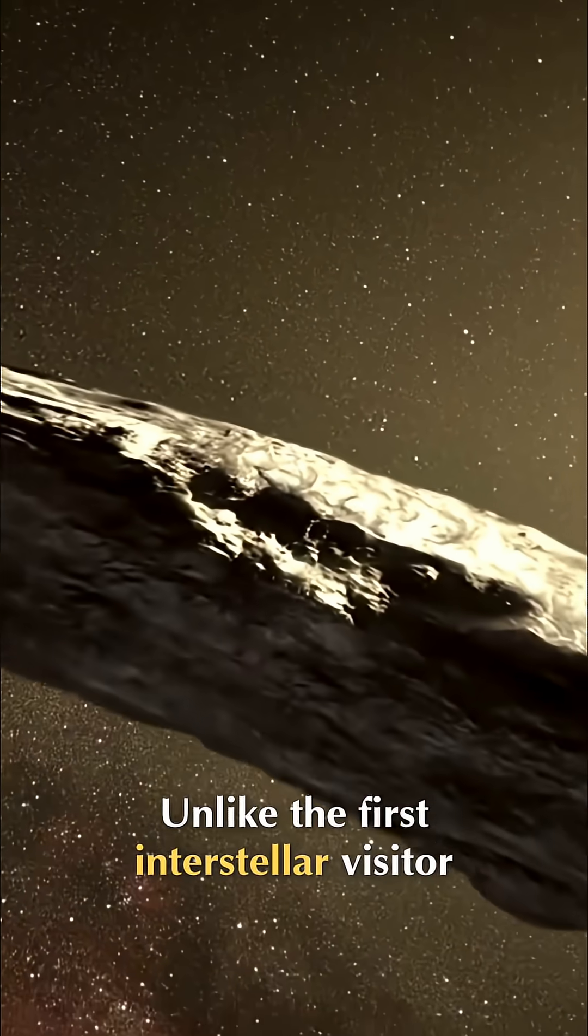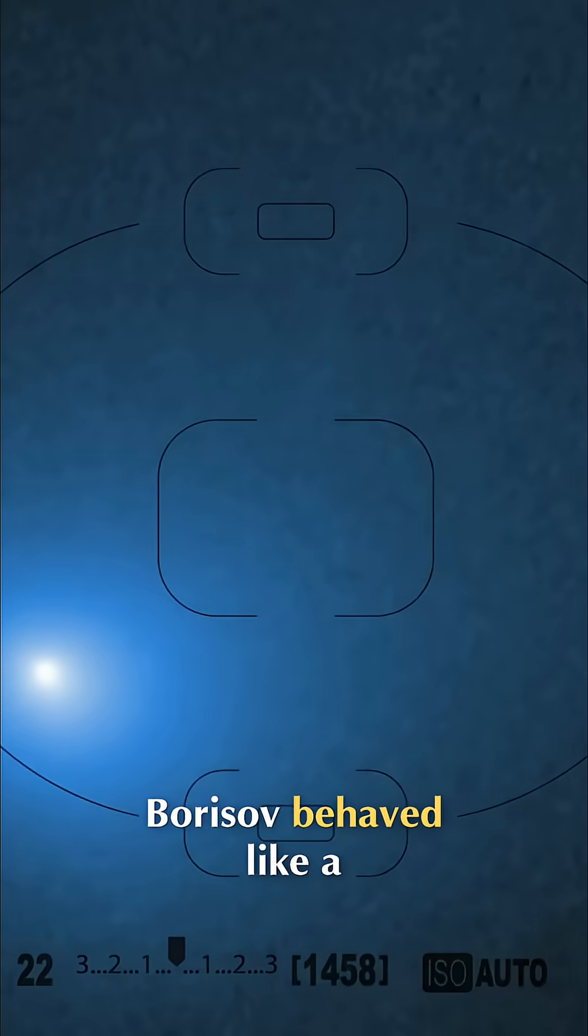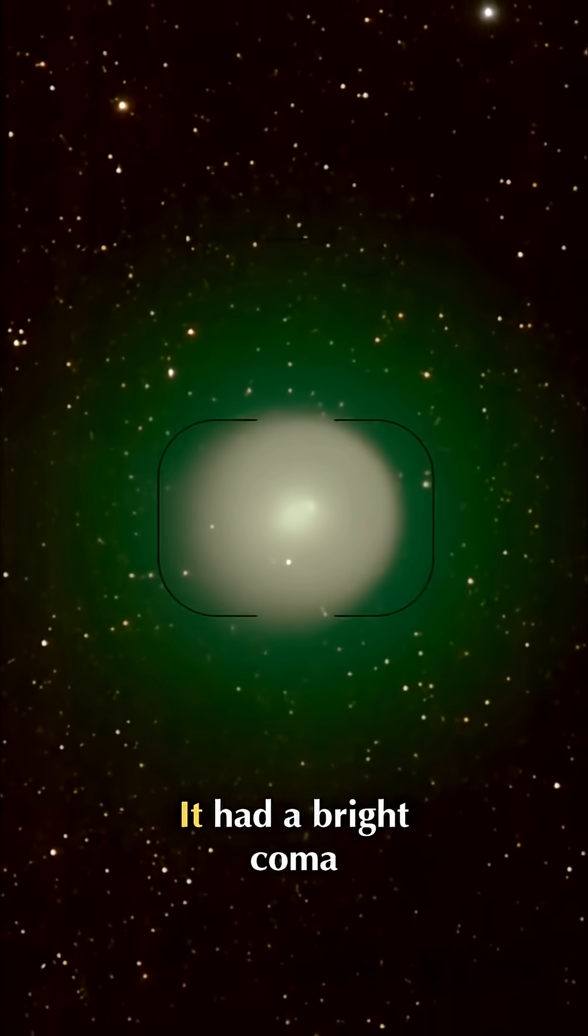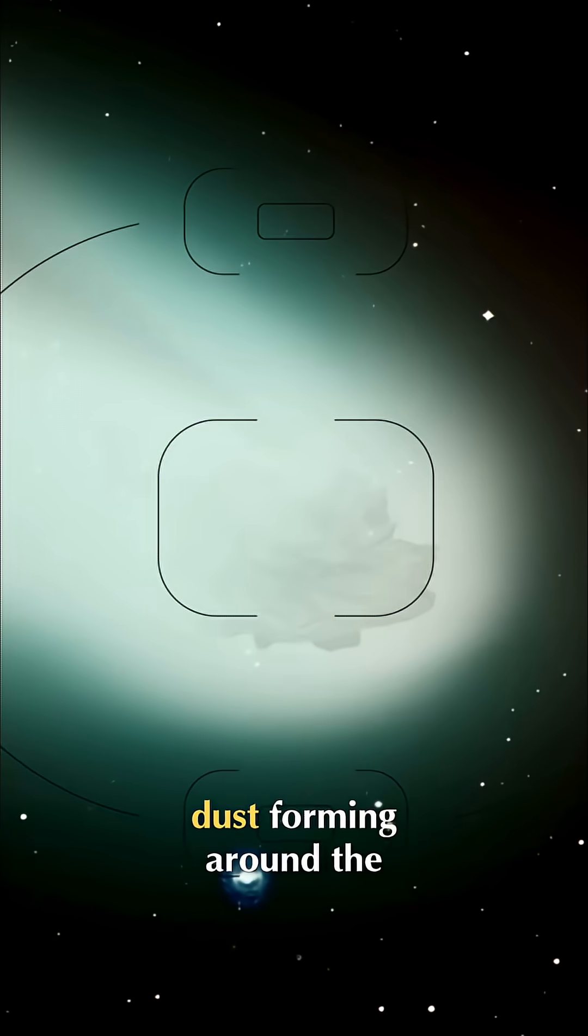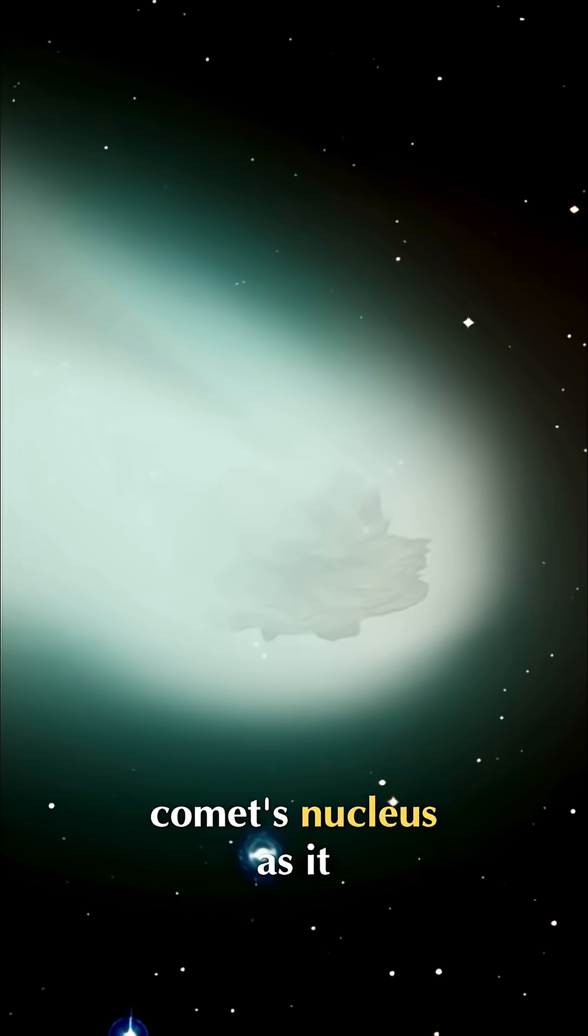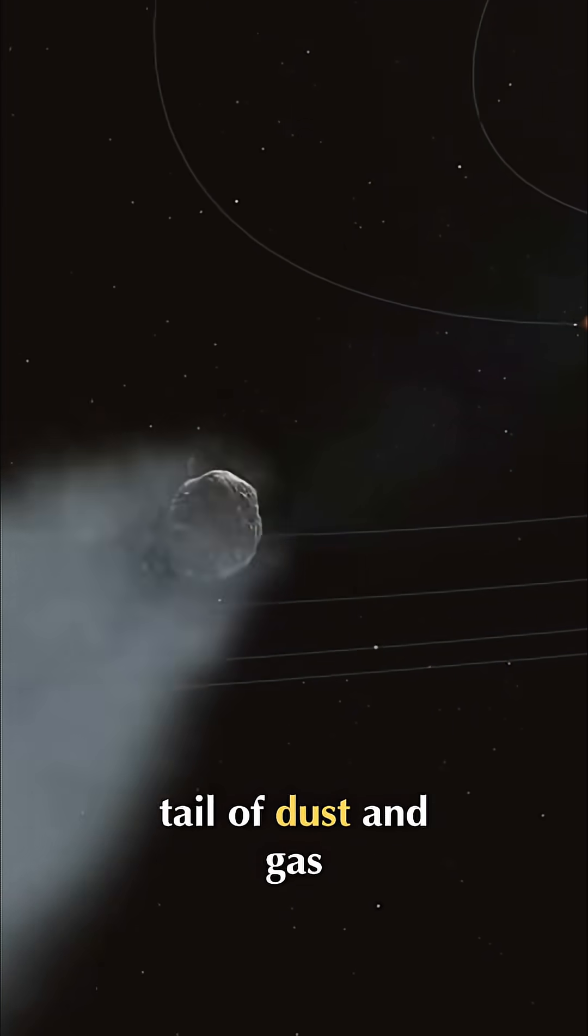Unlike the first interstellar visitor, Oumuamua, which looked more like an asteroid, Borisov behaved like a classic comet. It had a bright coma—a temporary fuzzy atmosphere of gas and dust forming around the comet's nucleus as it approaches the sun—plus a long tail of dust and gas.